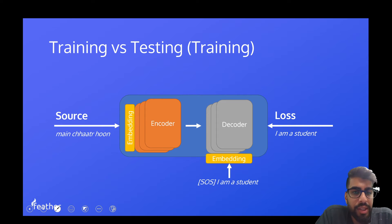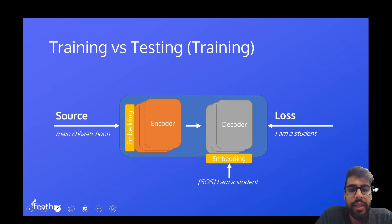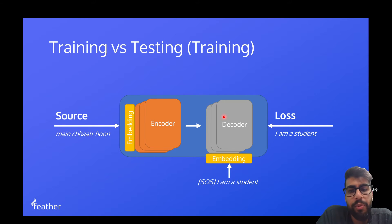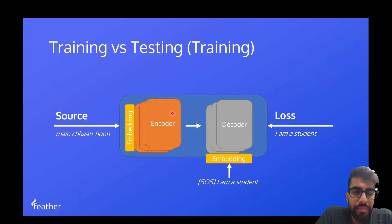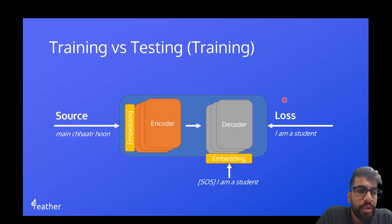One thing that was missing from the earlier diagram was this embedding layer. Our source comes in, we embed it, we run it through our encoder. As we know with machine learning, we're going to need a loss — some target sentence to work the loss out against.